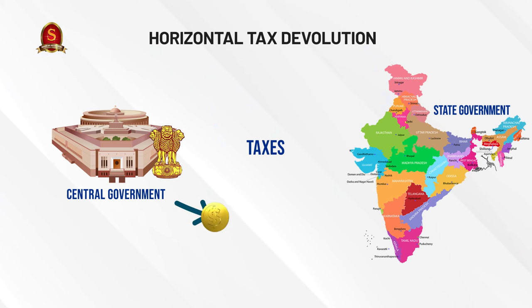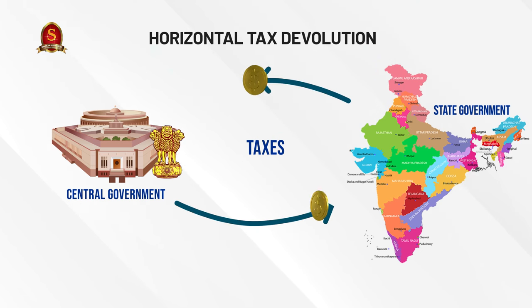The second key term is horizontal tax devolution. Once resources come from the centre to the states, we need to spread this 41% across the states in a meaningful way. Since states differ in size and requirements — Maharashtra and Goa, for example, are very different — the 41% cannot be shared equally across all 28 states. We need criteria to determine each state's share.